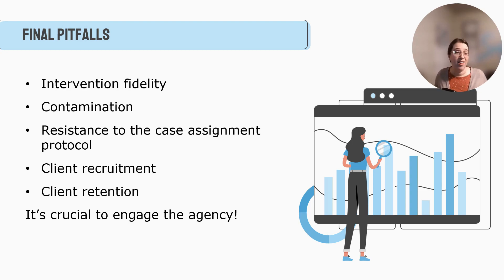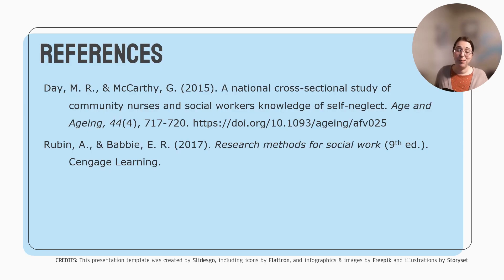It's really critical to engage the agency to make sure that the leaders, to make sure the clinicians who may be administering the intervention, to make sure that the administrative assistant who's collecting the surveys or data from the clients, we want to make sure that everyone is on the same page and they are clear about what their role is, what the intervention they're using is, and what the structure is. So that's quasi-experimental designs. For the next chapter, we're going to jump into single-subject or single-case designs. Thanks!